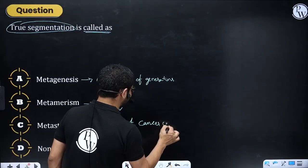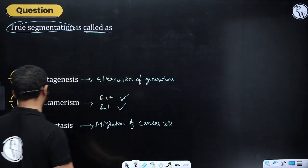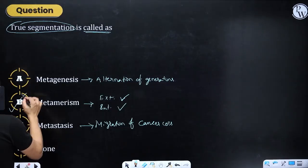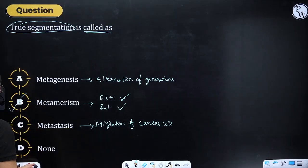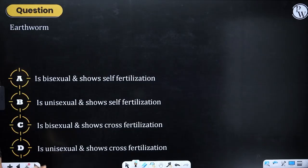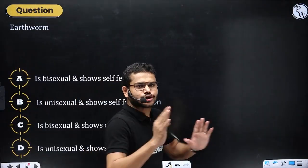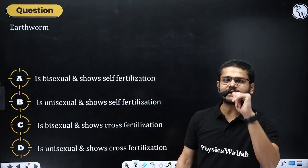And metastasis is when cancer cells migrate from one place to another place in the body. So the answer to this question is option B. Next, regarding sexuality and fertilization.